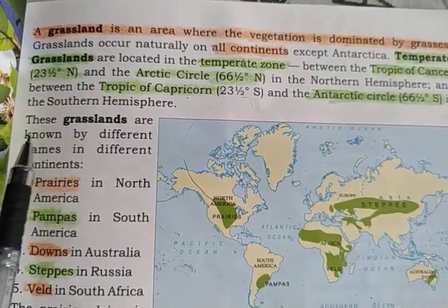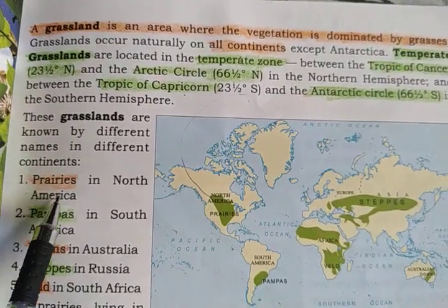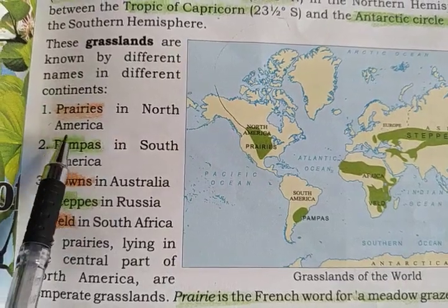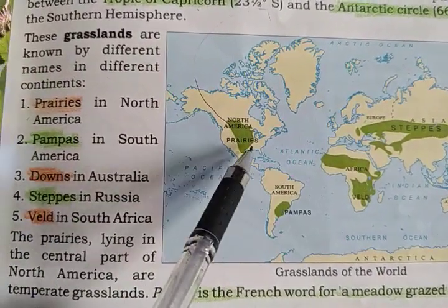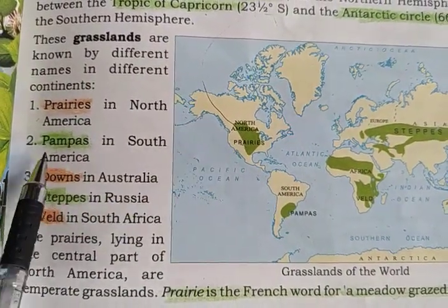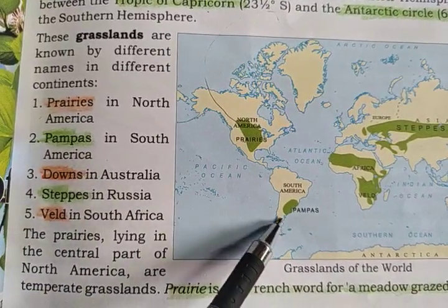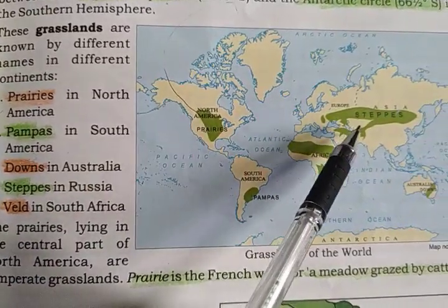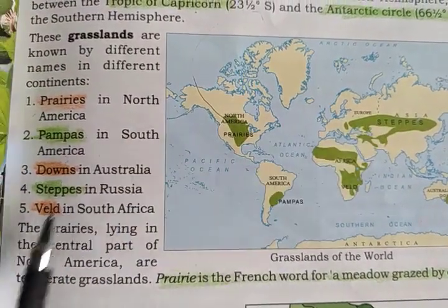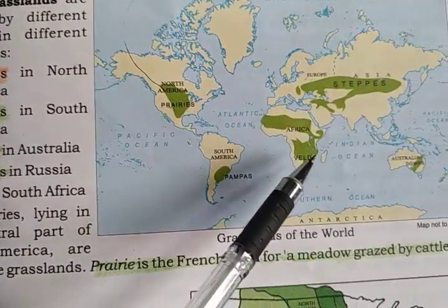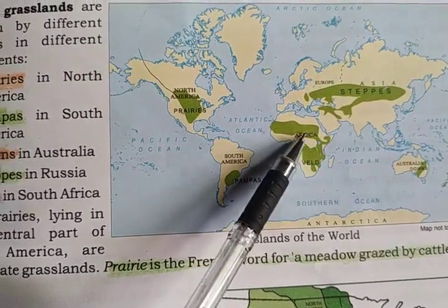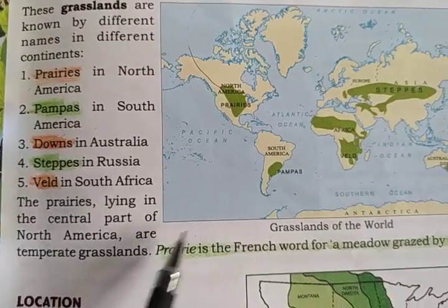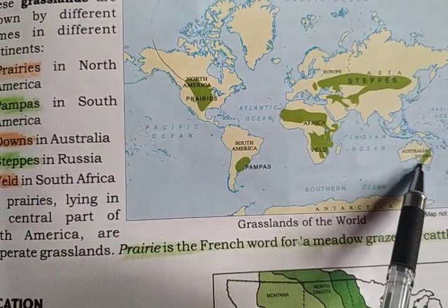Grasslands are known by different names on different continents. It is called Prairie in North America, Pampas in South America, Steppes in Russia, Veld in South Africa, Savannas, and Downs in Australia.